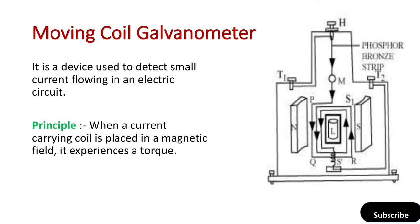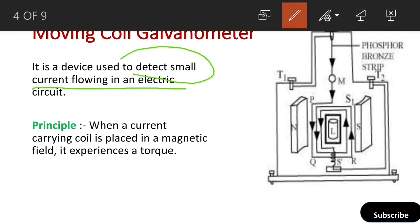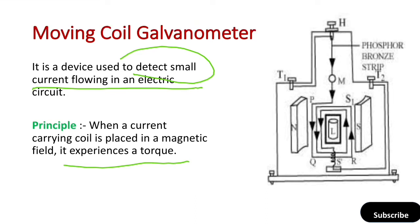Next is the moving coil galvanometer. It is a device that we use to detect small current flowing in an electric circuit. When a current-carrying coil is placed in a magnetic field, it experiences a torque. This principle is the basis of the moving coil galvanometer.